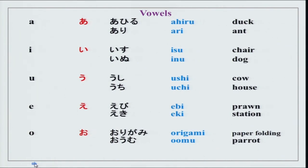Now we will do the vowels quickly and give you some vocabulary. You can repeat after me — the meanings are given in black. This is the vowel series A, E, U, A, and O: ahiru, ari, isu, inu, ushi, uchi, ebi, eki, origami, omu, uchi. You can repeat these again and again — I am sure you will feel comfortable very soon.